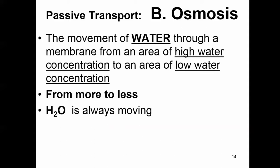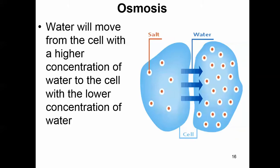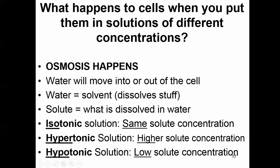Osmosis — quick review. There are some terms we always need to know when we talk about osmosis: hypertonic, hypo, iso. I'll put a link in the description — I did another video devoted to these different types of scenarios and word problems. Water goes in the direction of a hyper. I did another video on that, so I'm not going to go into that right now. That's one of the aspects about movement across the membrane, which is water.